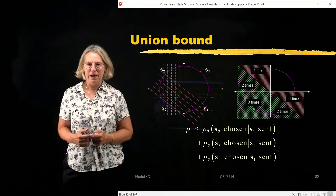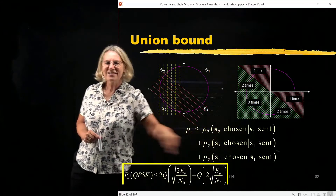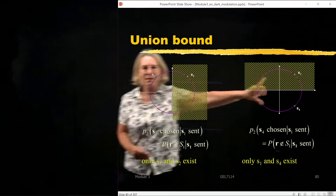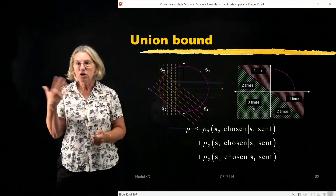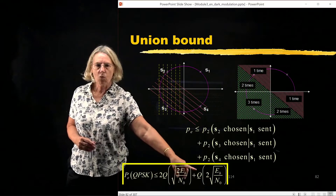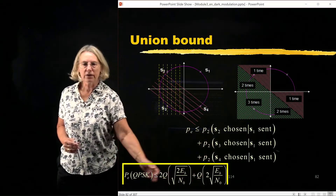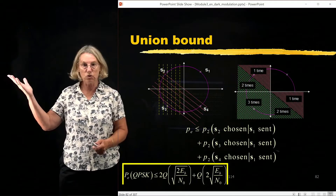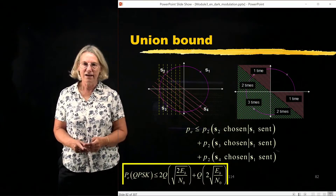You might ask yourself, how tight is this bound? It's actually a very, very good bound. Here is another way of writing these three components. These two pairs — S1-S2 and S1-S4 — are at the same separation, and S1-S3 is at a larger separation (the anti-diagonal). The probability of error is determined by how long those distances are. Essentially I have two terms at the smaller distance and one term at the larger separation. This is the numerical value of the union bound on QPSK performance.